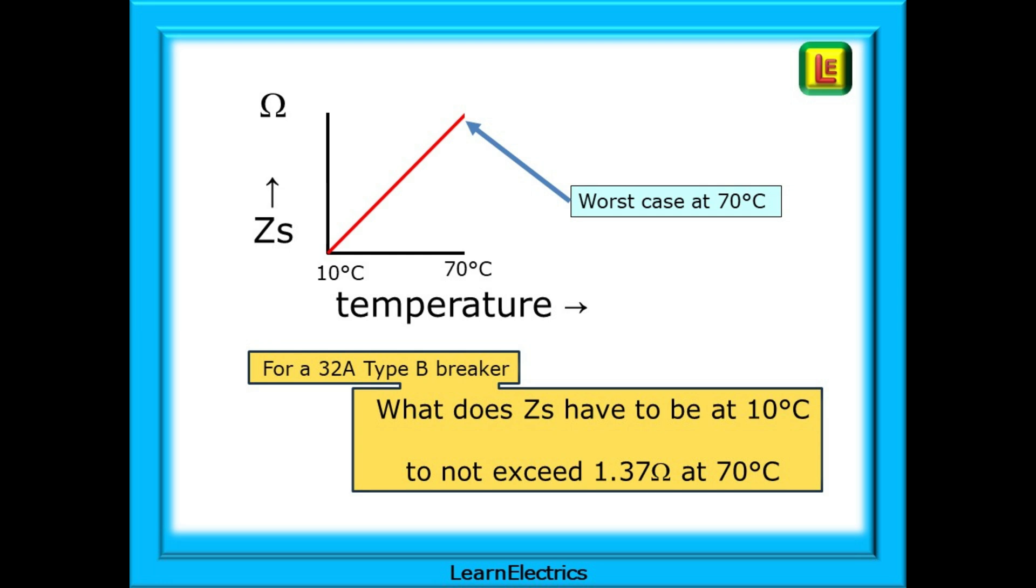If we know the end point if we know what the maximum ZS should be for a device according to the wiring regs can we work backwards to find a smaller resistance for a starting point that will guarantee that we do not exceed the numbers shown in the regs book as the temperature and resistance increases. For the 32 amp breaker that we have just used we must answer the question what does ZS have to be at 10 degrees Celsius to not exceed 1.37 ohms at 70 degrees Celsius.